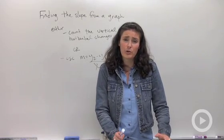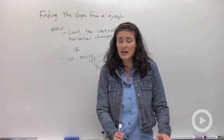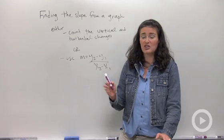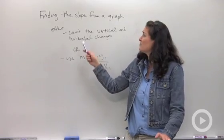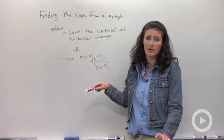There's a couple different ways to approach it. One way would be to find any two points that the line goes through and to count the horizontal change and the vertical change and write them as a fraction. Just make sure you write the vertical change on top of the fraction and the horizontal change on the bottom.